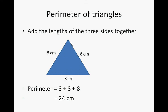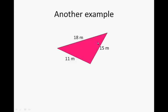If we get to a triangle that does not have equal sides like this one that has a length of 18 meters, 15 meters, and 11 meters, to calculate the perimeter of this triangle we'll add 18 plus 15 plus 11, and that gives us 44 meters.